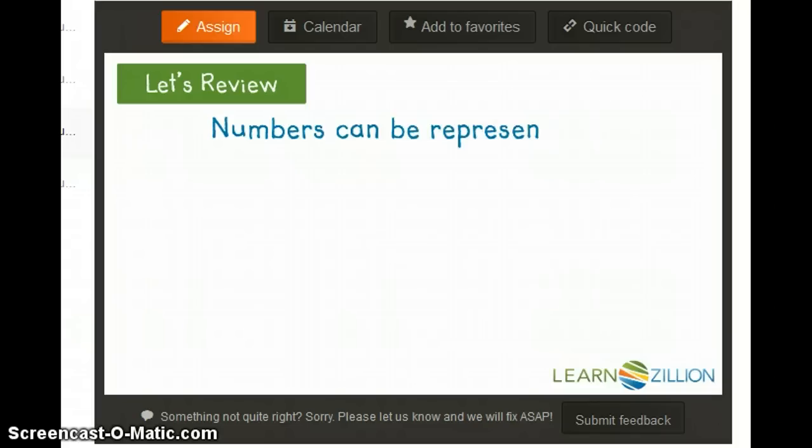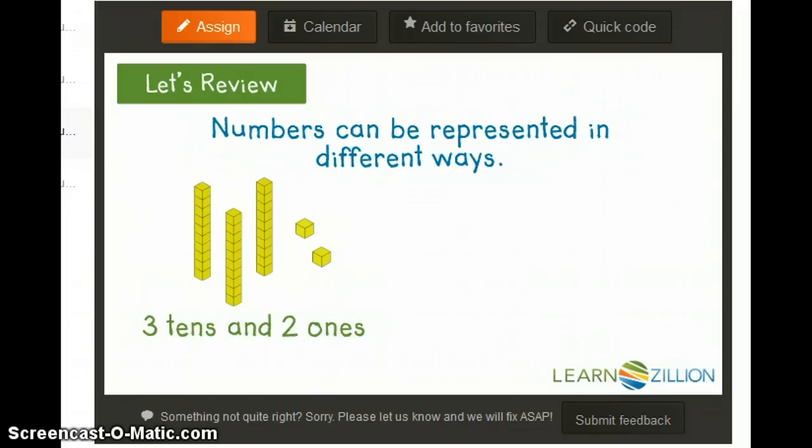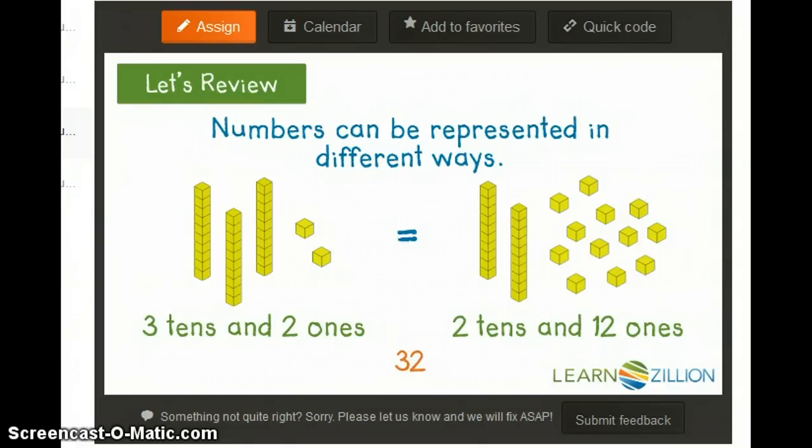It's also important to remember that numbers can be represented in different ways. Three tens and two ones is the same as two tens and twelve ones. Both examples represent 32.